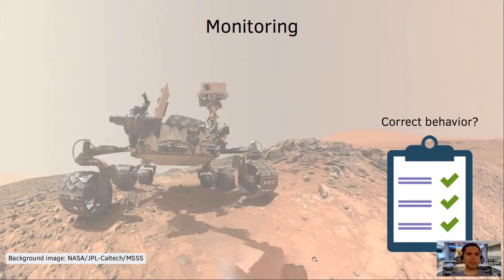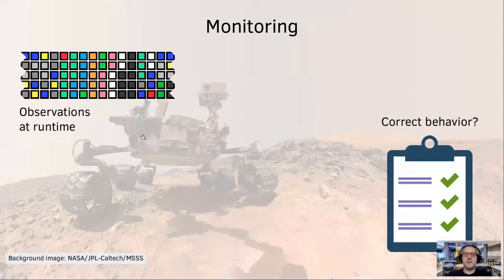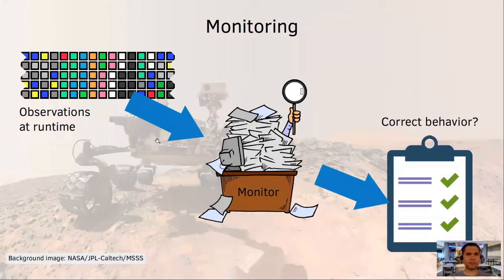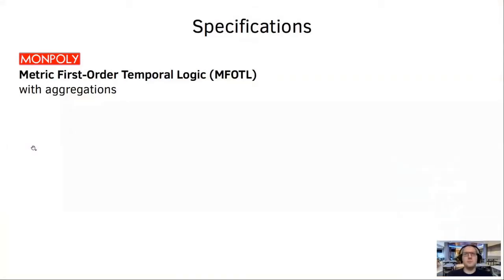Interesting. That indeed sounds like a perfect application for monitoring. Can you observe somehow what's going on in the modules? We have detailed event logs, yes. Great. That's the first input we need for monitoring. The second input is a formal specification of the policies. How would that look like? Well, there are many different formalisms. One powerful tool that I'm familiar with is called Monpoly. It uses metric first-order temporal logic, or mFOTL for short. It is a temporal logic, so you can express properties that relate different points in time.